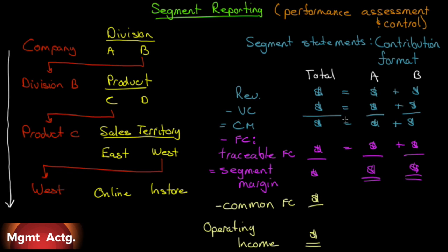Now we subtract our fixed costs. Notice what I've done here — there is a new word in front of fixed costs: traceable fixed costs. Traceable fixed costs are fixed costs that you can trace to a specific segment, so it will still be a fixed cost of the total company. But the fixed cost itself belongs to a specific segment and not the other. The existence of segment B has a fixed cost that belongs to segment B. If segment B disappeared, that fixed cost would disappear. That's what we mean by traceable fixed costs — we want to trace everything we can to the proper segment.